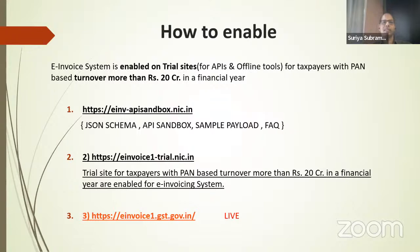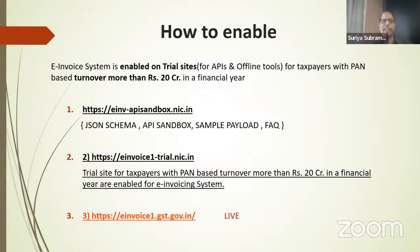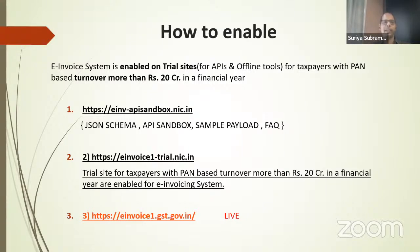There are three key portals. First, e-inv-apisandbox.nic.in — this is only for software developers who want to develop against the schema. Second, einvoice1-trial.nic.in — if you are a normal taxpayer wanting to test the system, you go here to prepare invoices and upload JSON files. Third, einvoice1.gst.gov.in — this is the main live website. A common mistake is that taxpayers generate invoices on the trial website and remain there for a very long time. Please make sure you are generating on the real portal, einvoice1.gst.gov.in.